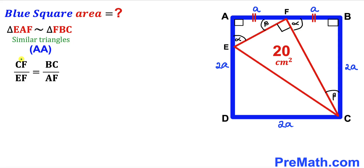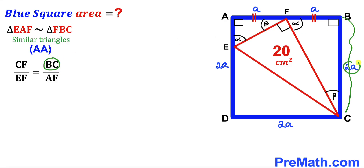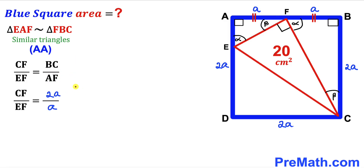The ratio of side lengths CF to EF must equal the ratio of BC to AF. We know BC equals 2a, so we replace BC with 2a, and AF equals a, so we substitute a. The a's cancel out, simplifying the right-hand side to 2 divided by 1.